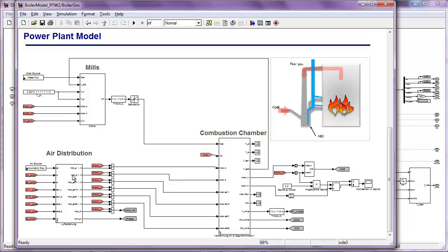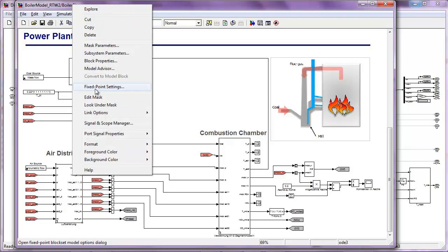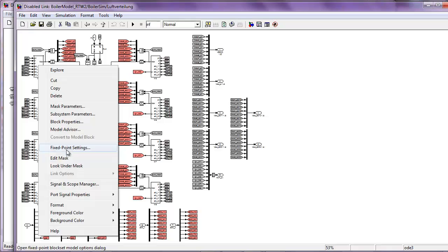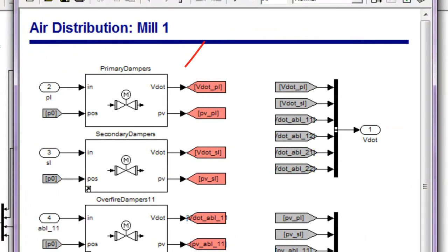In the air distribution section, air from a source block is distributed among the different dampers for each mill. If we look inside this block, you can see that each of the eight mills has its own distribution block. And if we check the first one, for instance...